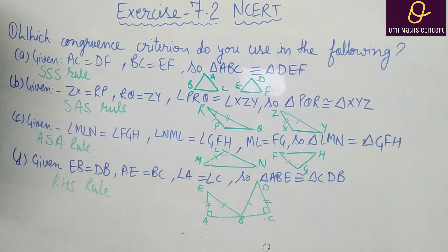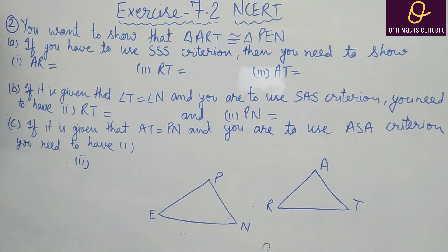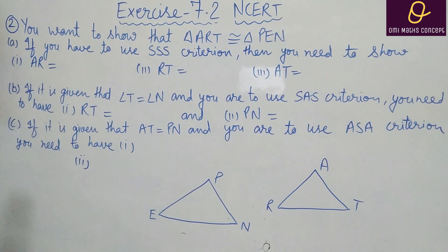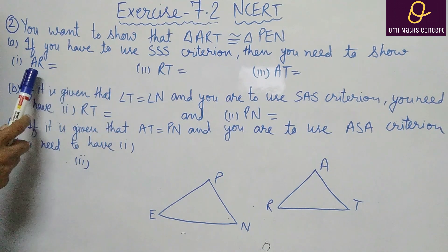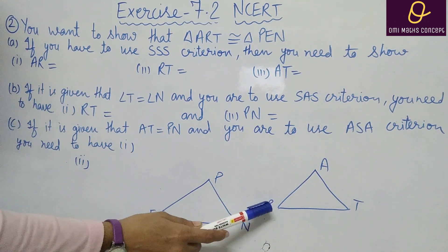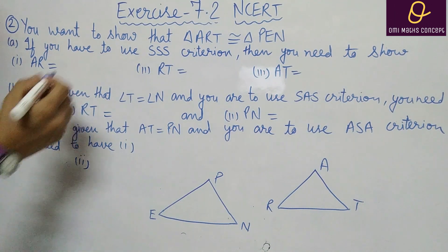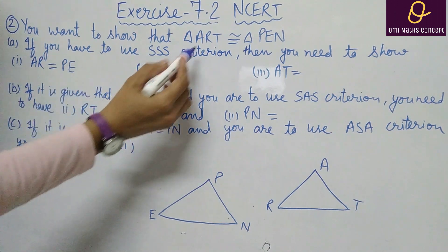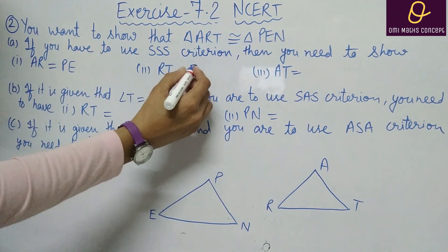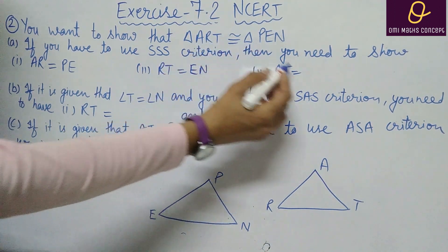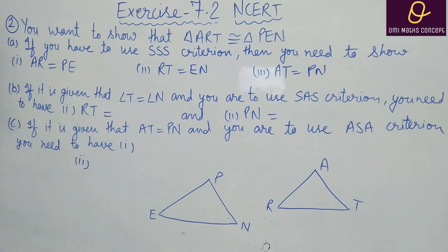Now question number 2. You want to show that triangle ART is congruent to triangle PEN. If you have to use SSS (Side-Side-Side) criteria, what should we need? AR equal to PE (first two points), RT equal to EN (last two), and AT equal to PN (first and last).